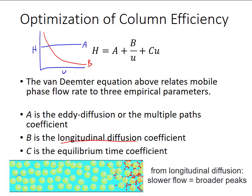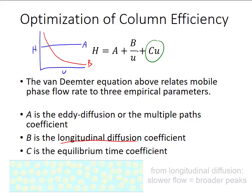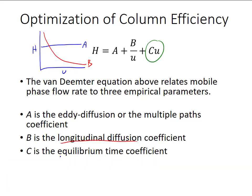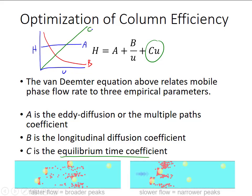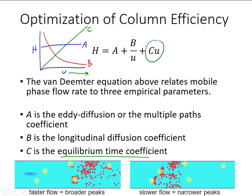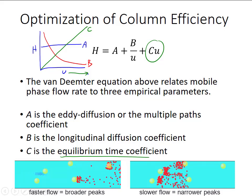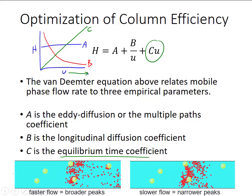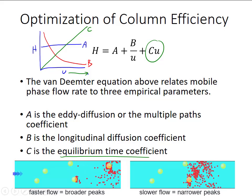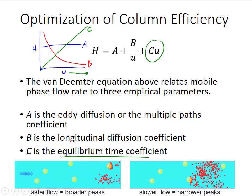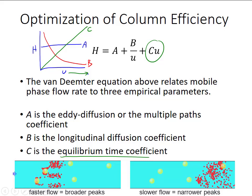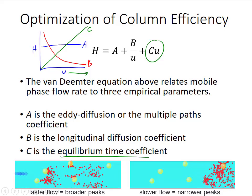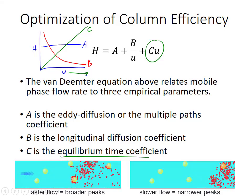Finally, parameter C is the equilibrium time coefficient and it is a linear function of flow rate. Increasing the flow rate decreases the time available to a particle to properly equilibrate with the stationary phase, resulting in inefficient non-equilibrium mass transfer. Rushing your solutes through the column will result in fewer effective theoretical plates, peak broadening, and lower resolution.